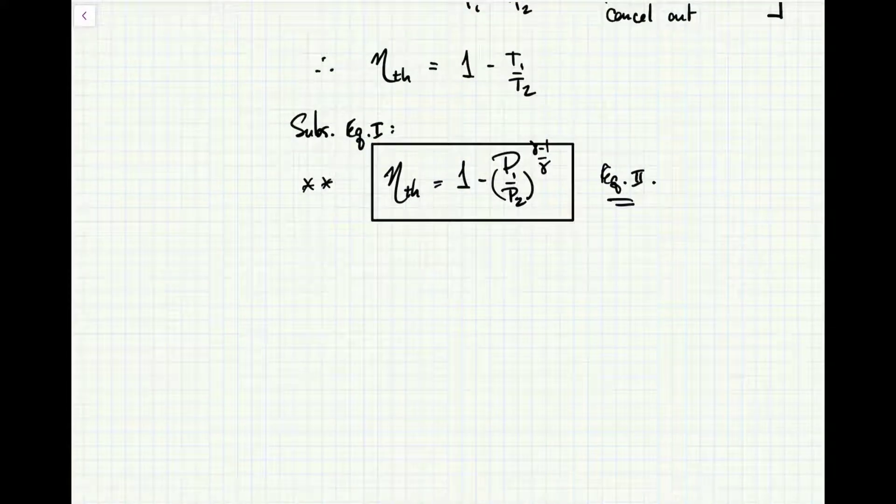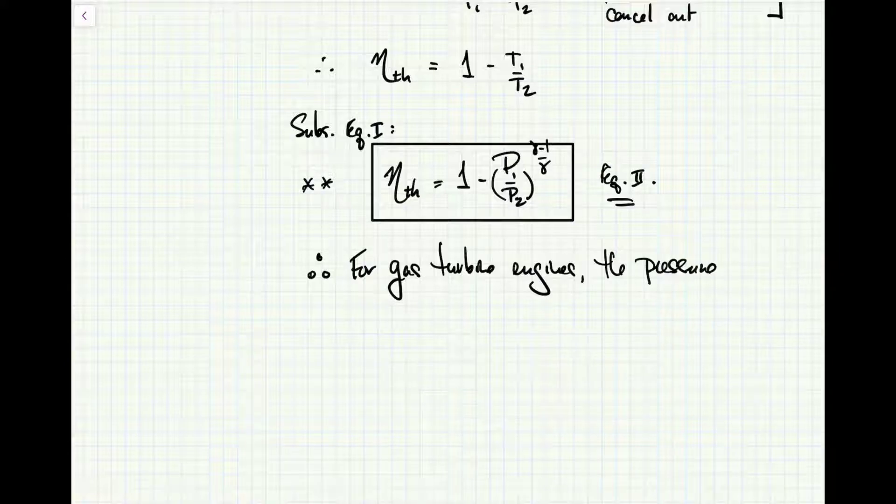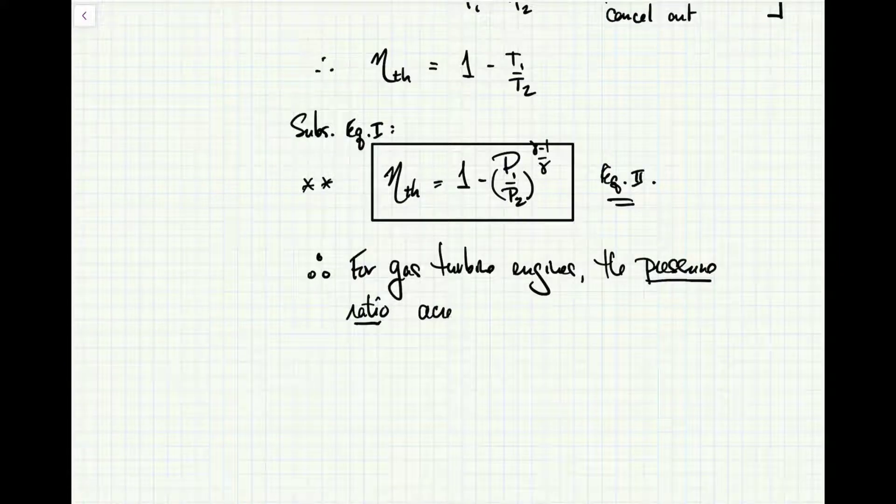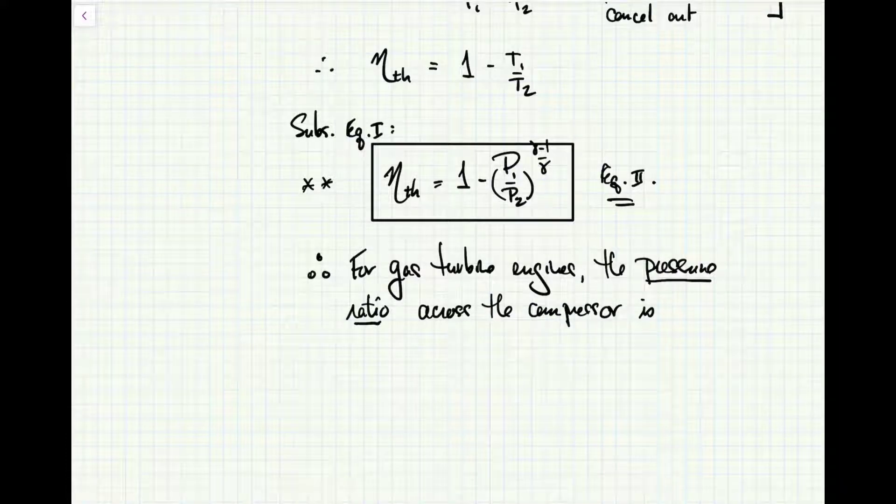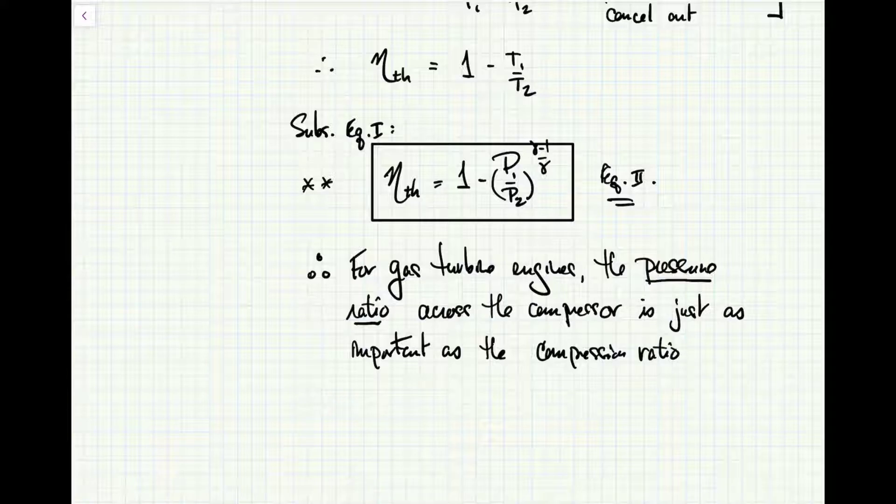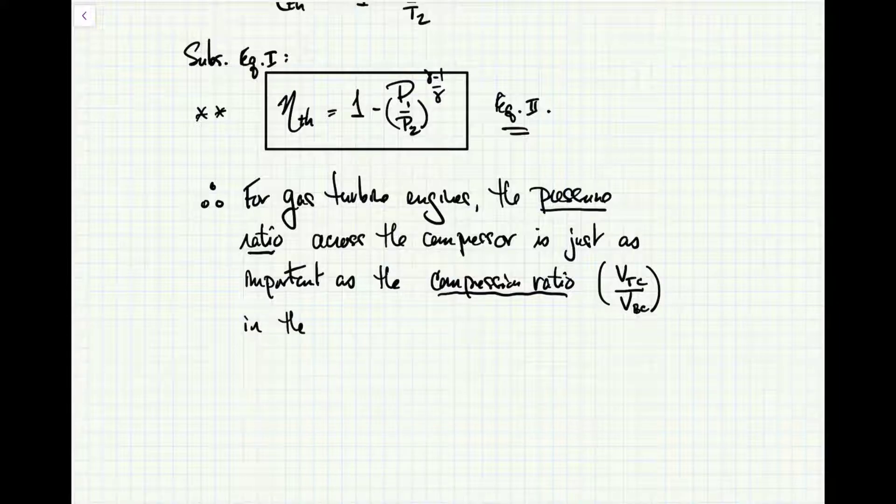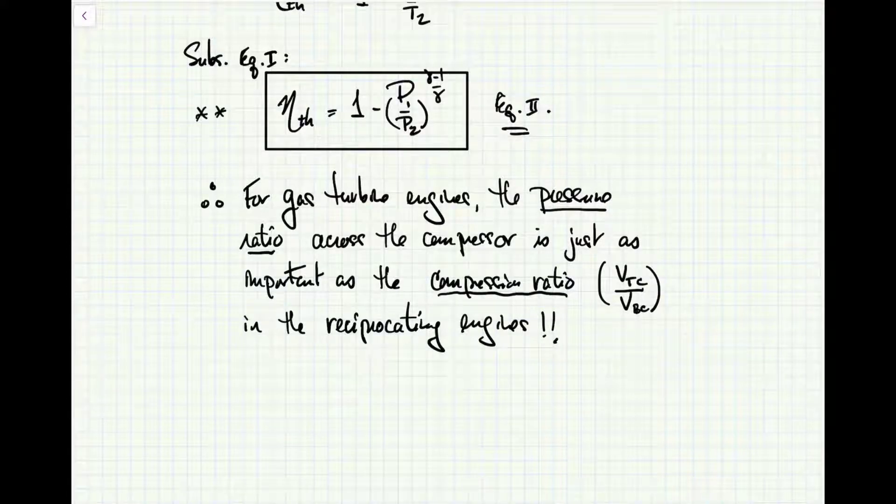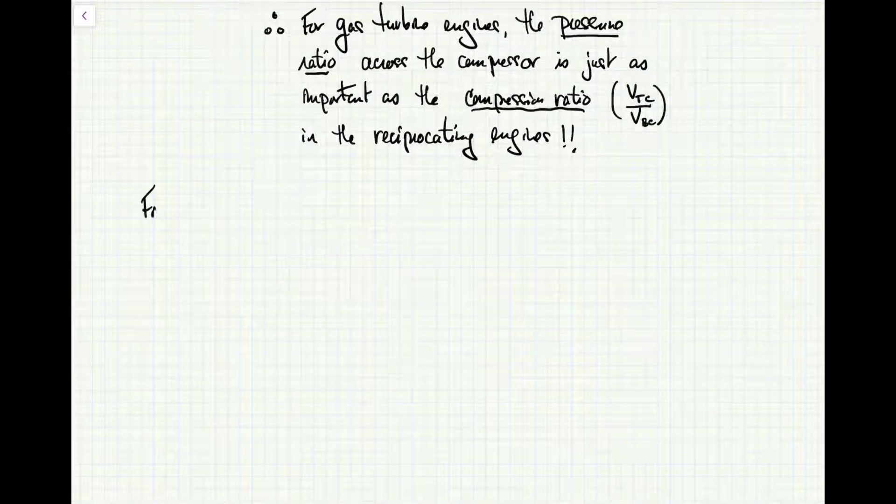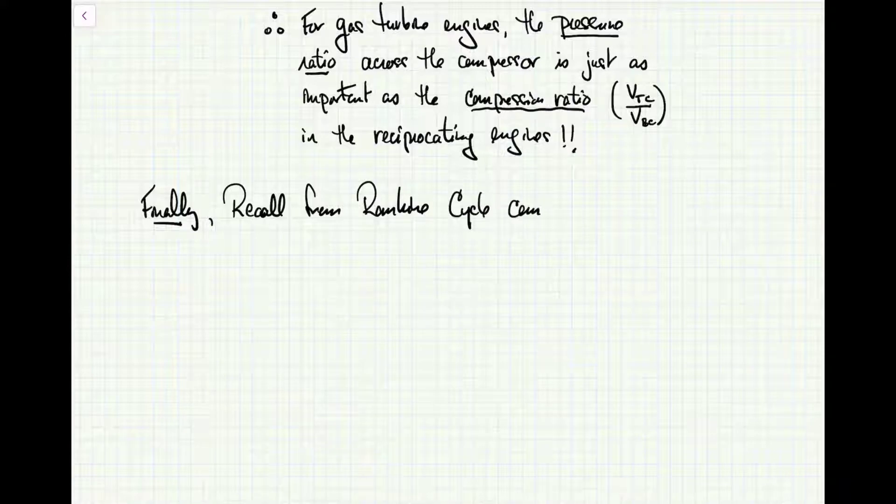That pressure ratio across the compressor is for the gas turbine what the compression ratio r was for reciprocating engines—the volume at top dead center divided by the volume at bottom dead center. This ratio across the compressor, P_2 over P_1, is just as important as the compression ratio. The relationship is not the same, but the parameter itself is just as important. R is compression ratio for reciprocating engines; P_2 over P_1, the pressure ratio, for gas turbine engines.